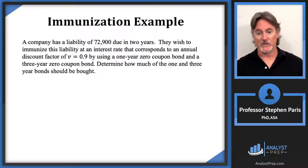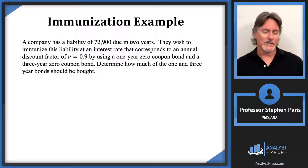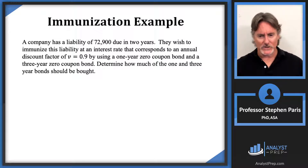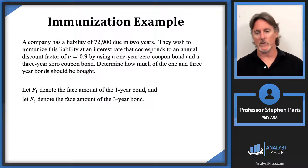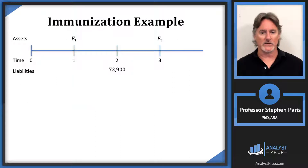The question is to determine how much of the one-year and three-year bonds should be bought. I gave you the V value of 0.9, which makes calculations a bit nicer with fewer decimals. There is an interest rate that corresponds to V = 0.9. Let cap F1 denote the face amount of the one-year bond and cap F3 denote the face amount of the three-year bond. The liability is due at time two, with an asset at time one of amount F1 and an asset at time three of amount F3.